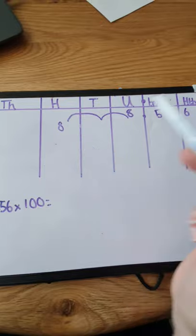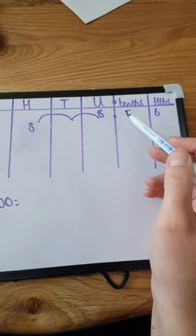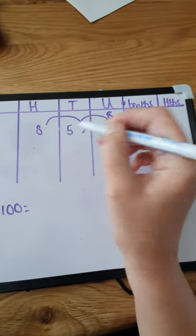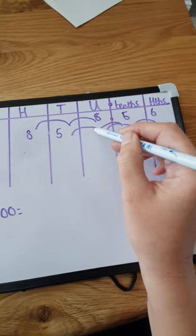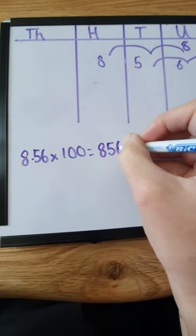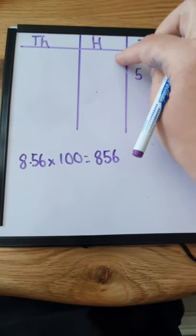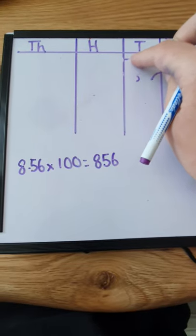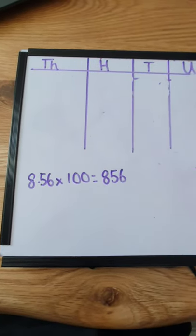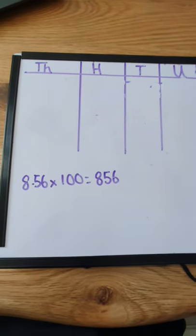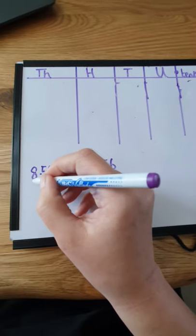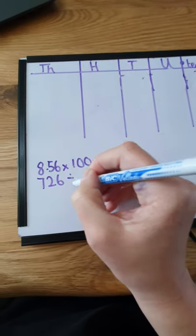We've timed it by 100 and it's gone up in value 2 places in our place value chart — it's gone from units to hundreds. We would then move the next digit: 5 tenths would go up 2 values to 5 tens. And our hundredths would go to units. So that gives us a new answer of 856. 8.56 times 100 is 856. So we've learnt that when we times by 100, the digits go up in value by 2 places.